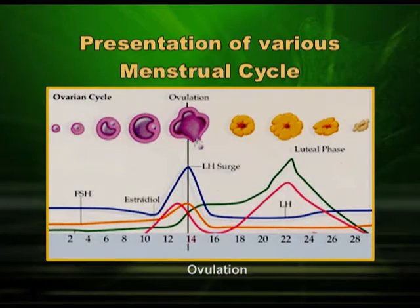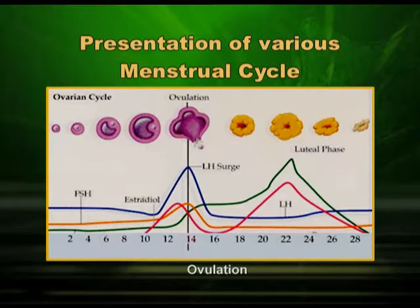This process takes around 14 days. FSH comes from the anterior pituitary and acts on the ovarian follicles, causing the immature follicle to become mature. This mature follicle is called the Graafian follicle, and the Graafian follicle becomes the source of estrogen — one of the two sex hormones in the human female.